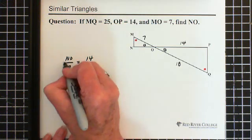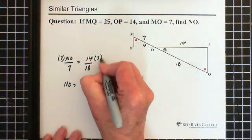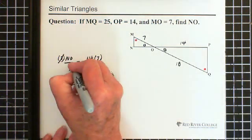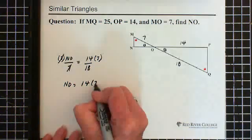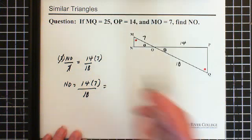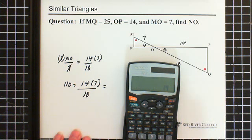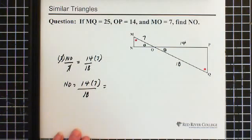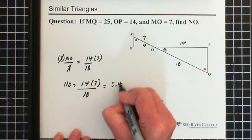And we're going to multiply this side by 7. Multiply this side by 7. Cancel on this side. So NO equals 14 times 7 divided by 18. So we have 14 times 7 divided by 18, which equals 5.4. So NO equals 5.4.